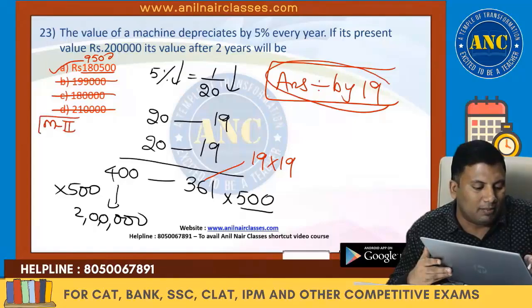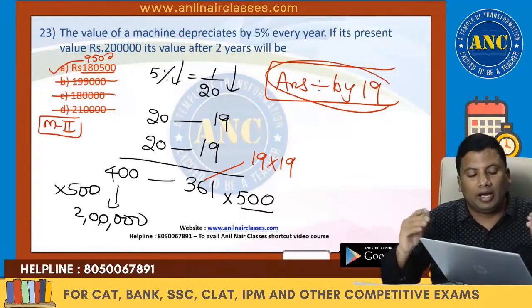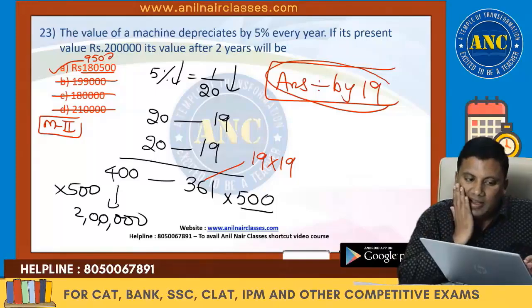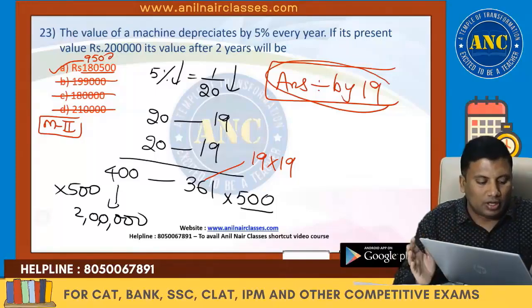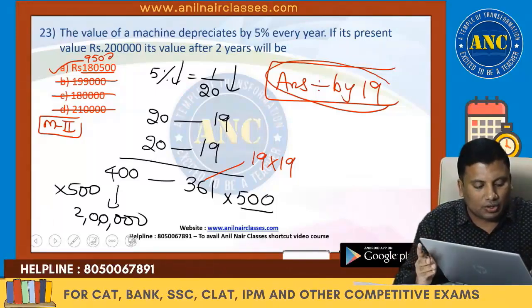For every problem I will give multiple angles to simplify. Method 1: X less than A + B to eliminate options. Method 2: answer must be divisible by 19. I hope it is clear.